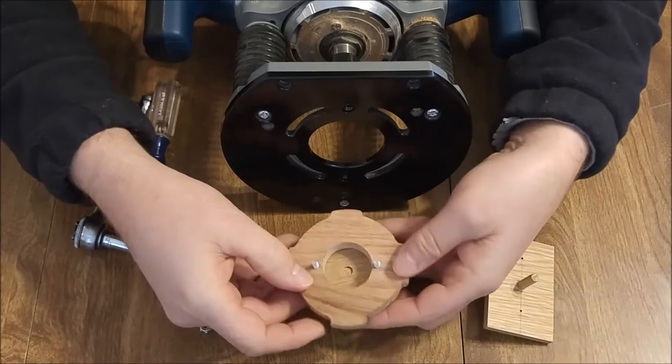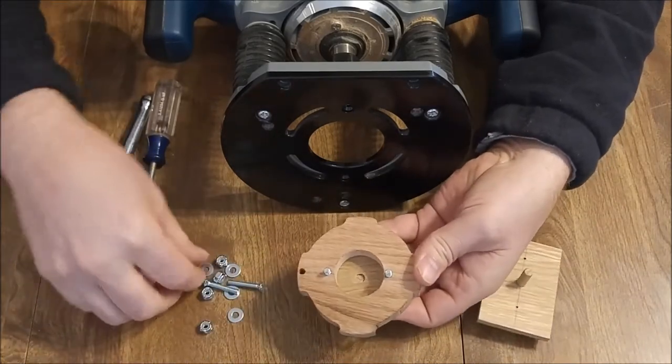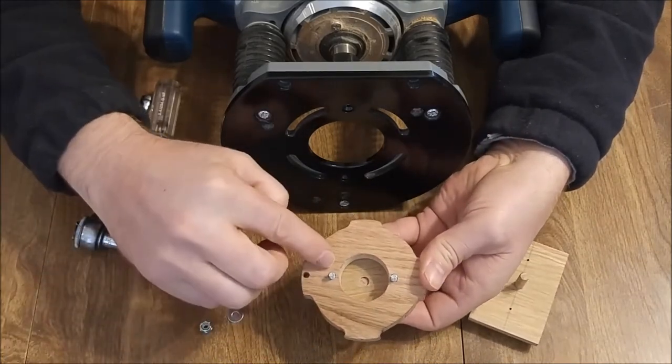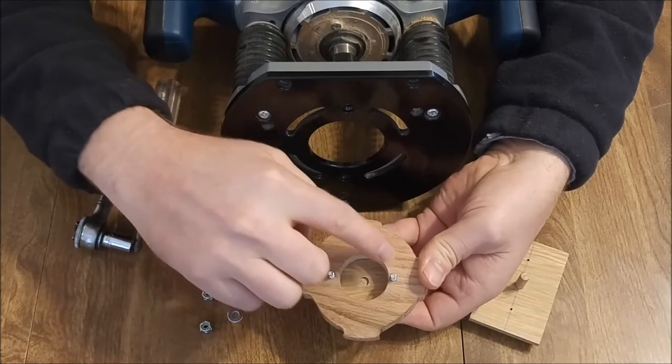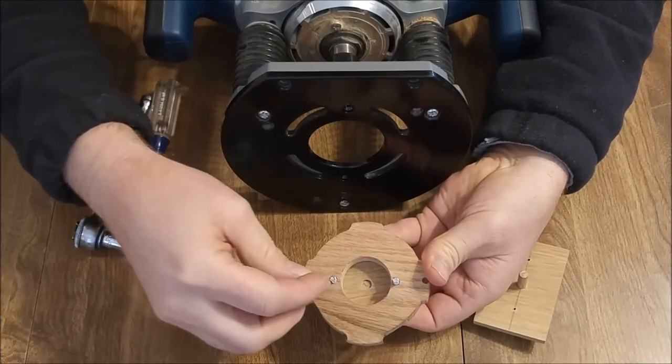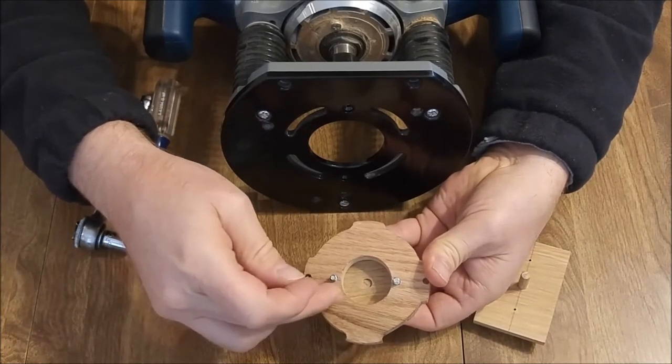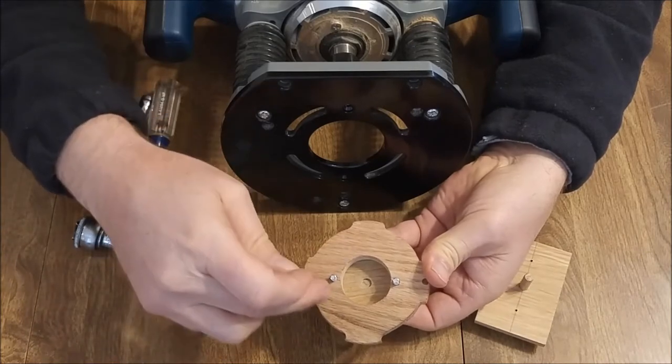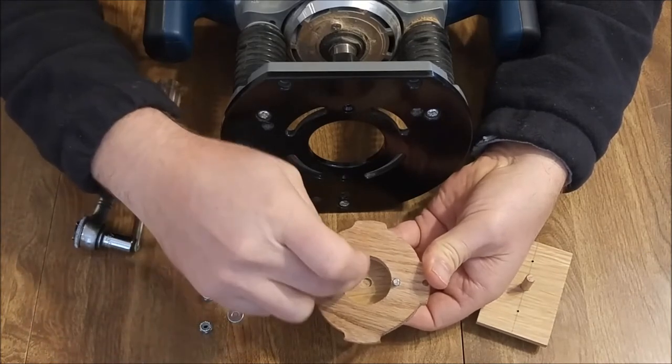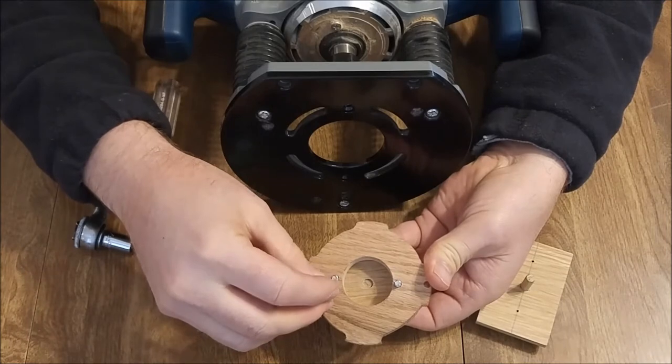We've got some flat washers that are used because these screws are pretty close to the edge. We want to use a flat washer to clamp down on this side of the wood rather than the other side, which makes it really secure.